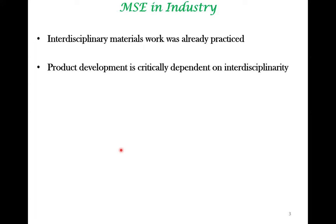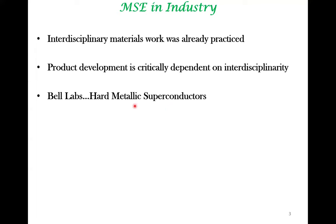Material science engineering in its interdisciplinary form was practiced very well in industry even before it was done in university settings. The quintessential players in this field in the early stages were two big labs. One is Bell Labs — for example, hard metallic superconductors require both electronic and mechanical properties of materials to be brought together for practical applications. Besides transistor development at Bell Labs, where physicists worked with electrical engineers to produce important devices, there are many examples where interdisciplinary material science thrived in industrial laboratory settings.